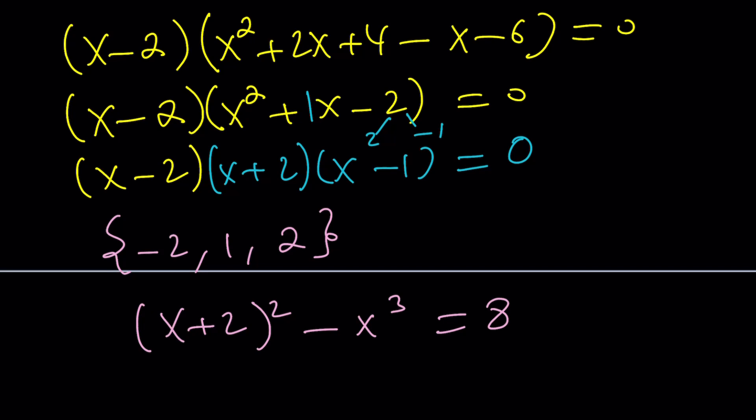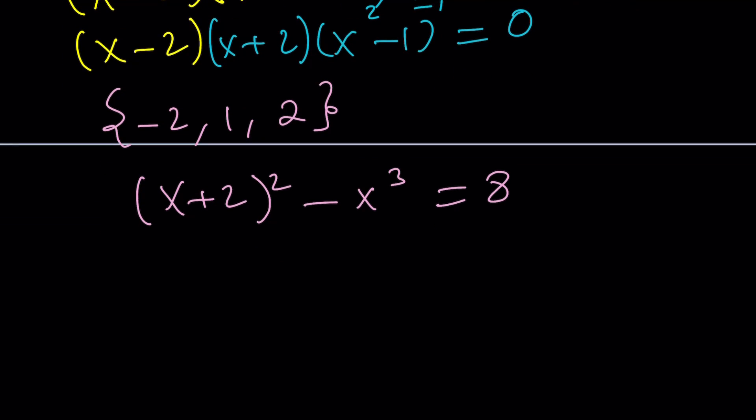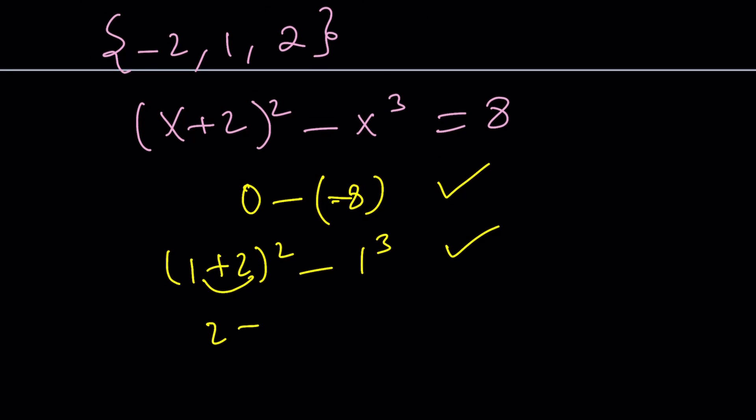For example, if x equals negative 2, we're going to get 0 minus negative 8. And of course, that's equal to 8. If you plug in 1, (1+2)² - 1³. This is 3 squared, which is 9 minus 1. Of course, that's also 8. And then if you plug in 2, (2+2)² - 2³ is going to be 4 squared, which is 16 minus 8. Again, that's 8. So, there are 3 values, which shouldn't be a surprise, because this is a cubic equation.